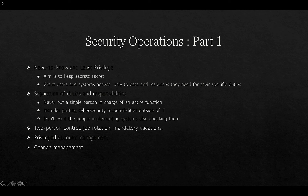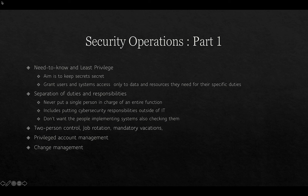Forcing staff to take mandatory holidays is a good way of seeing whether something changes while that person is away. If regular payments were being made and they stop when the person goes away, you can potentially highlight an irregularity. Privileged account management involves looking at who has privileges, revoking them when not needed or when someone leaves, and restricting privileged access. Change management implements a controlled system for making organizational changes — checked and signed off so changes aren't made indiscriminately and won't negatively impact the organization.